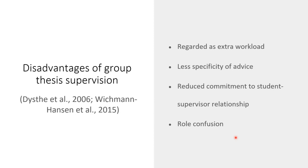Finally, there is role confusion. Supervisors and students all have to play different roles in group supervision. Students actually have to act as co-supervisors for their circle members, but they also need to know how to fulfill their role and responsibilities. If this is not properly arranged, they don't know what to do. Supervisors must be facilitators, supporters, and examiners, and if they don't know exactly what to do, it is very difficult for them to fulfill their role tasks.